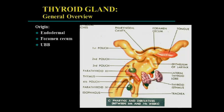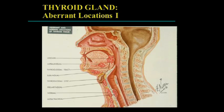The thyroid gland arises from the foramen cecum, at the junction of the anterior two-thirds and the posterior one-third of the tongue. It's a bilobed structure that grows downward in the midline of the neck, usually attached by a stalk that regresses afterwards. The ultimobranchial body gives rise to the calcitonin-producing cells. So it arises from the foramen cecum and descends to its normal adult position.